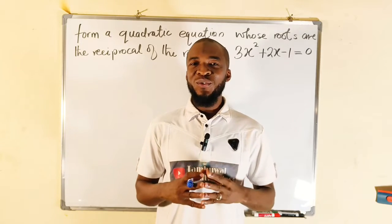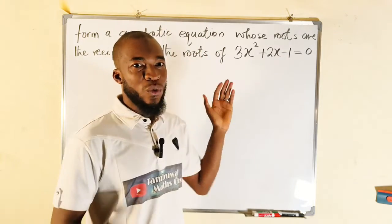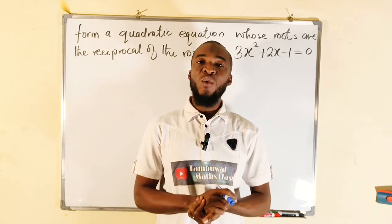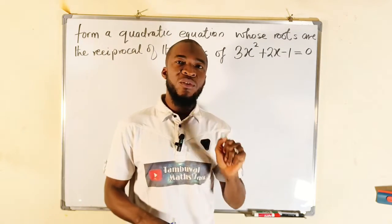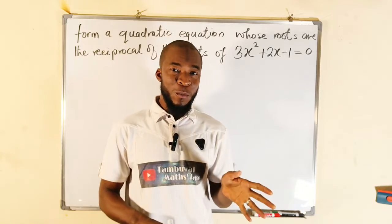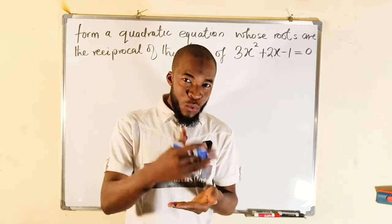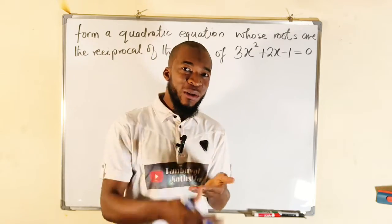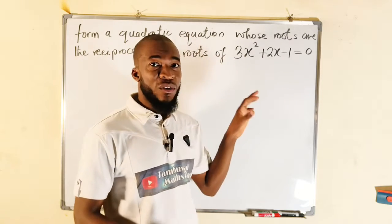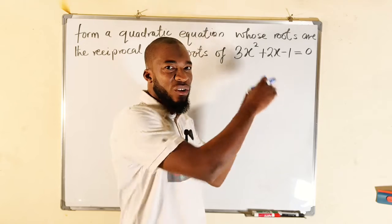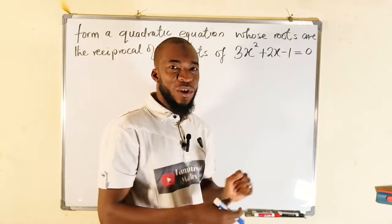Hello, good dear viewers. In this tutorial we are going to find a solution to this interesting question which falls under the symmetrical properties of quadratic roots. We are given a quadratic equation here which is 3x squared plus 2x minus 1 equal to 0, but we are asked to form another quadratic equation whose roots are just the reciprocal of the roots of this quadratic equation. The roots are the two values of x that can satisfy the equation.